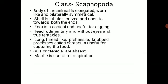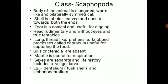Gills or ctenidia are absent. The mantle is present and is useful for the process of respiration. The sexes are separate and the life history includes the veliger larva, meaning the development is indirect as it includes a larval stage.